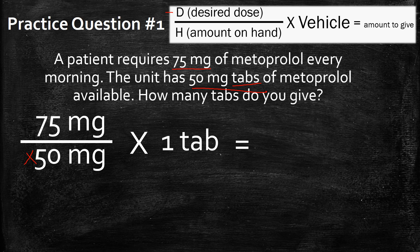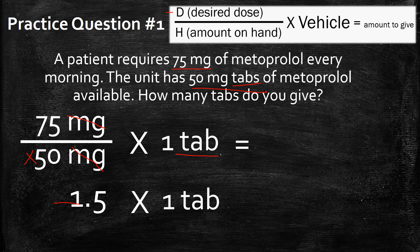Let's solve this. The answer: 75 milligrams divided by 50 — if you're paying close attention the milligrams cancel out — gives you 1.5. You multiply that by the vehicle, which is one tab, and that gives you 1.5 tabs. So you're going to give this patient 1.5 tabs to deliver 75 milligrams of metoprolol, which is the patient's required dose.